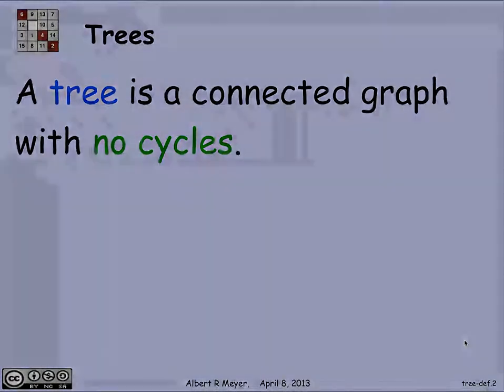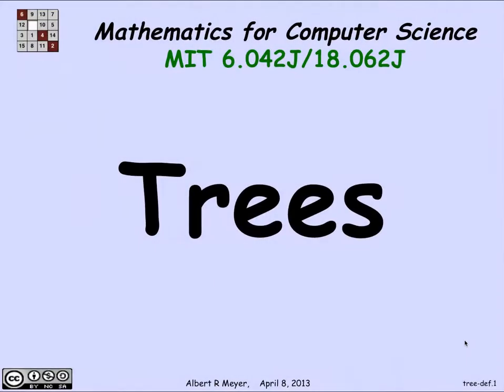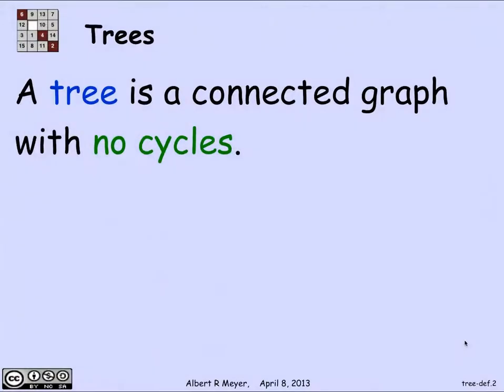Trees are about the most basic data structure that you're ever going to come across. They pervade computer science and other subjects. The simplest definition of a tree is that a tree is a connected graph with no cycles. In this setting we're talking about simple graphs and trees with undirected edges.